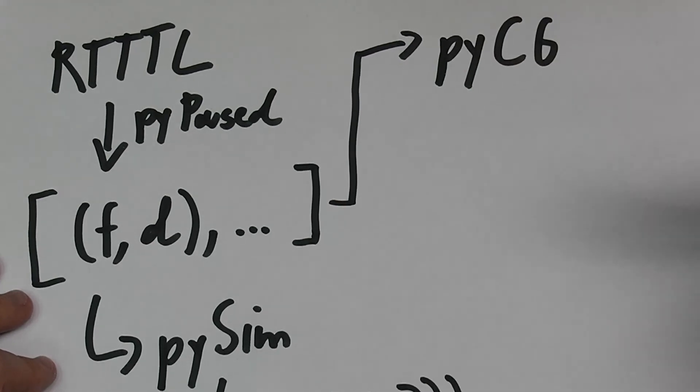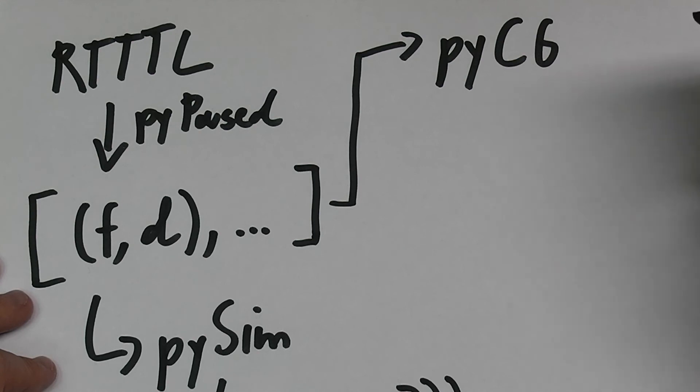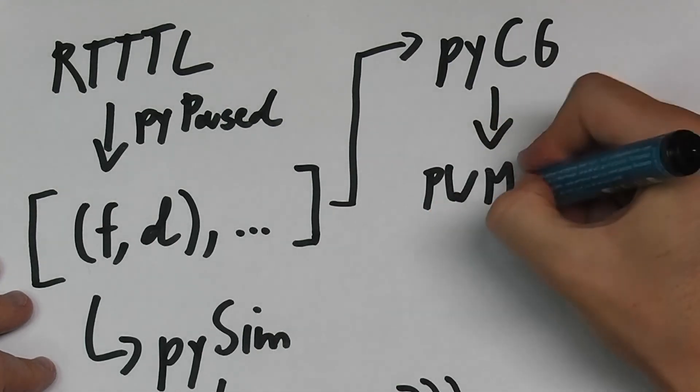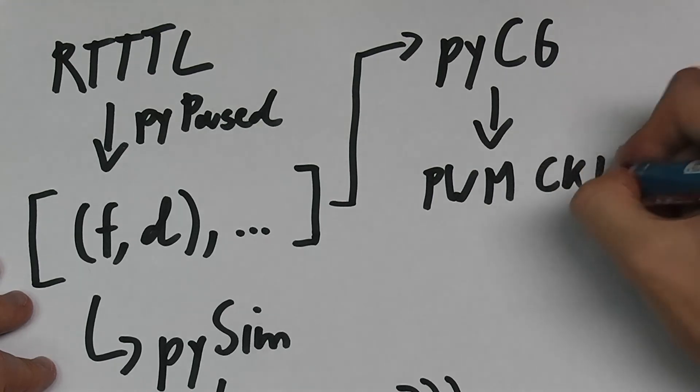This is actually the crucial step. What the code generator does is for each note of a certain frequency, it sets the PWM clock divider.